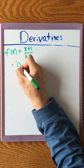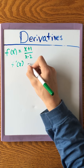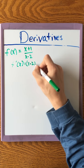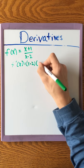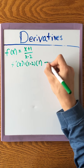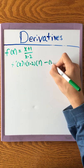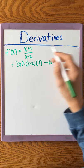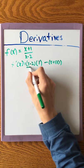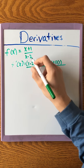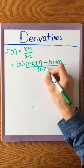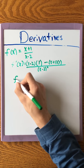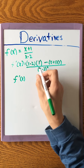We need to remember to use the quotient rule, which is: low (x-2) times the derivative of the high, which is just 1, minus high (x+1) times the derivative of the low, which is just 1, all divided by the low squared.